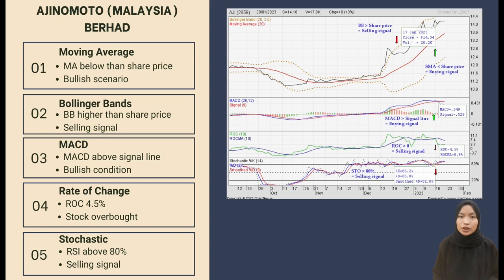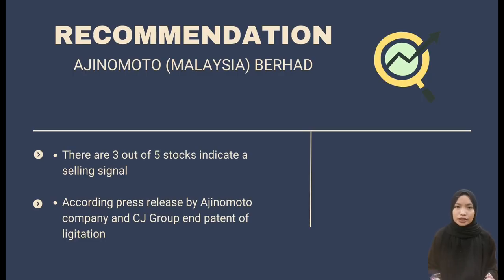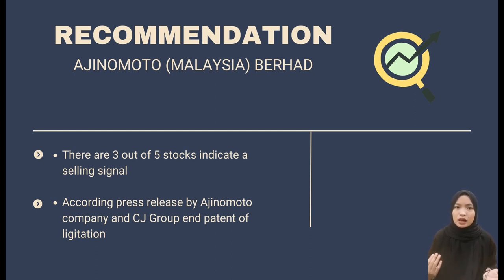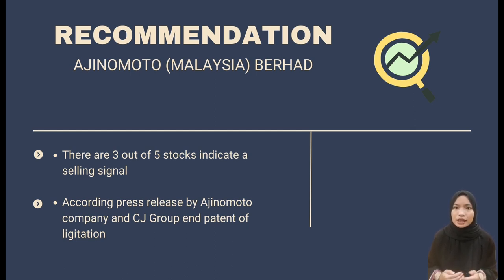For the last indicator, the Stochastic is 46.2% on 17 January 2023, which indicates an overbought stock and a selling signal. As a recommendation for Ajinomoto Company, according to a press release, Ajinomoto Company and CJ Group reached an agreement to end patent litigation in Germany on 17 January 2023. The patent held by the Ajinomoto Group remains enforceable and legitimate. Three out of five indicators exhibit a selling signal, so the best option for an investor is to sell the stock to prevent further losses.